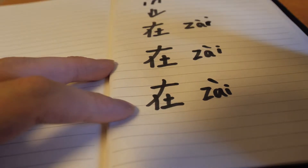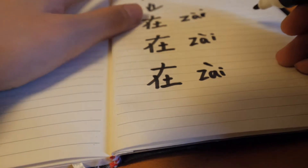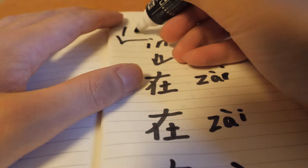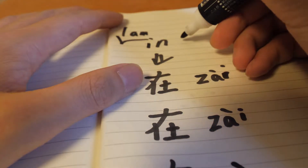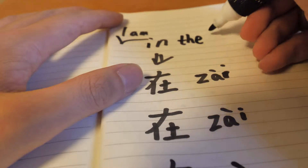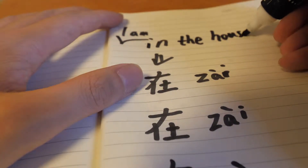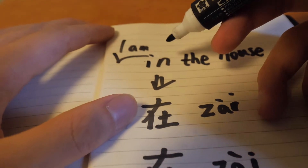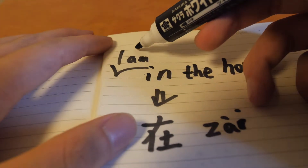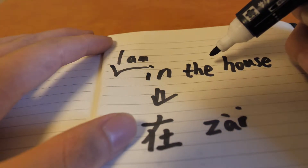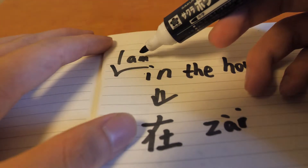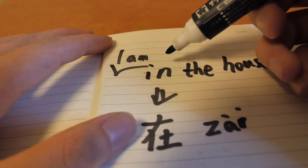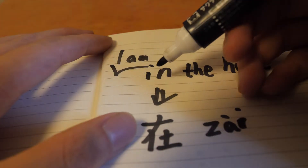So, your example will say: I am in the house. I am in the house. In Chinese, it is said: 我在屋子里, 我在房间里.